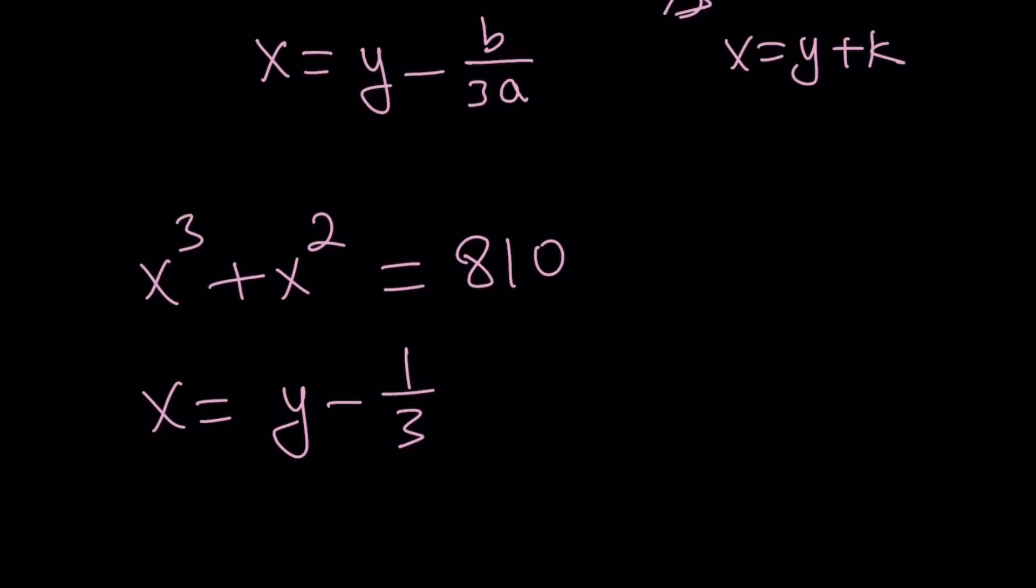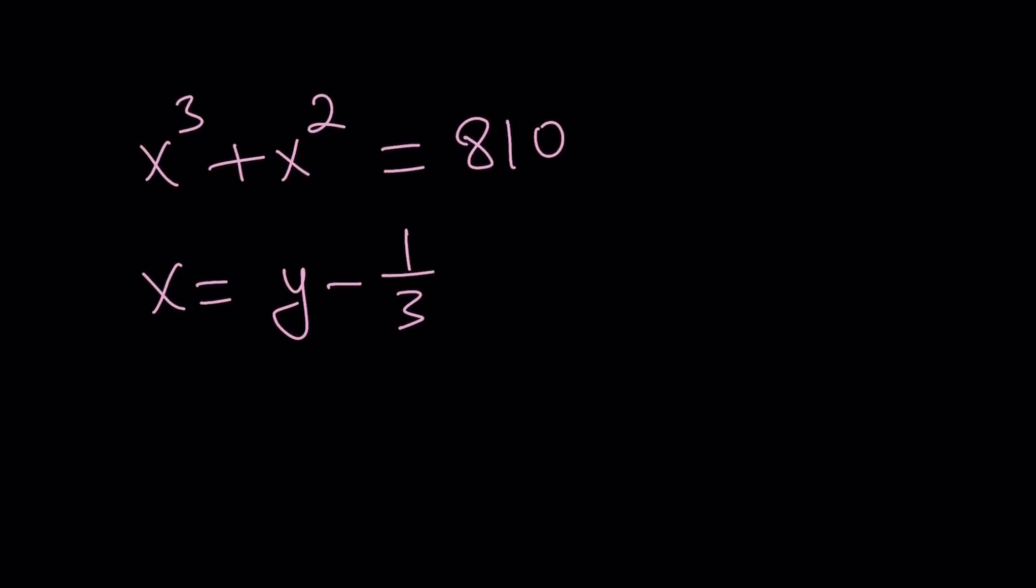You don't have to use y here - if you want to use tea, coffee, whatever variable you want, you can do it. But I'd like to use y, and don't question why. Here's what we're going to do: replace x with y minus 1 third. y minus 1 third to the third power - uh-oh, that's going to be some cubing - and then y minus 1 third to the second power equals 810.